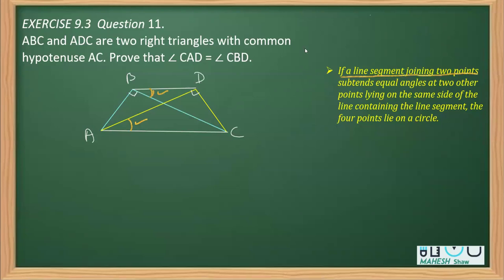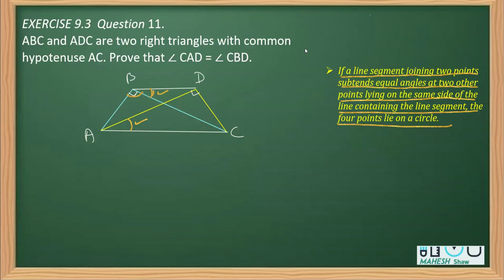The property states: if a line segment joining two points subtends equal angles on the same side of the line, then the four points lie on a circle. Here, angles ABC and ADC are both subtended by the line joining A and C, and are on the same side of AC. If these two angles are equal, then A, B, C, D are concyclic.